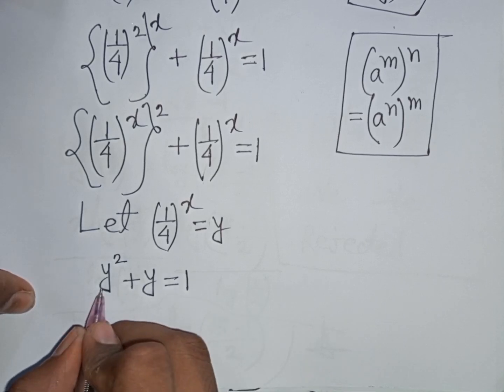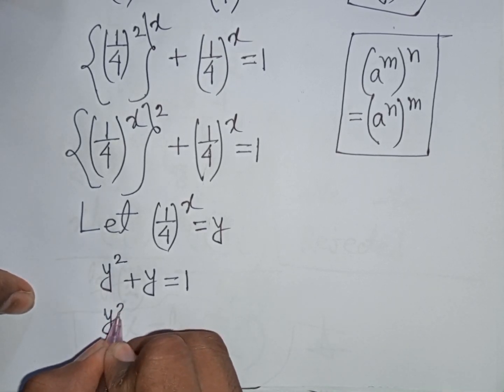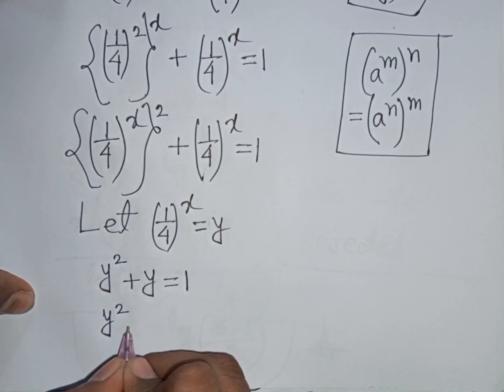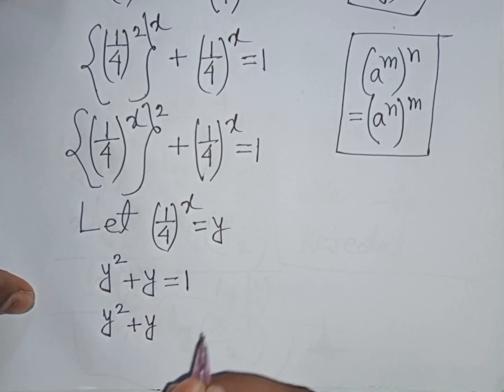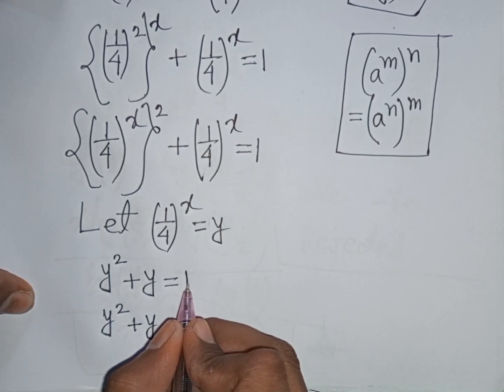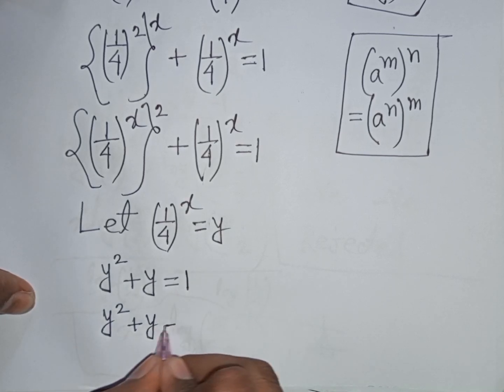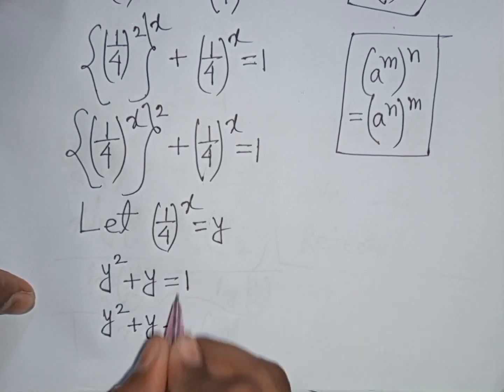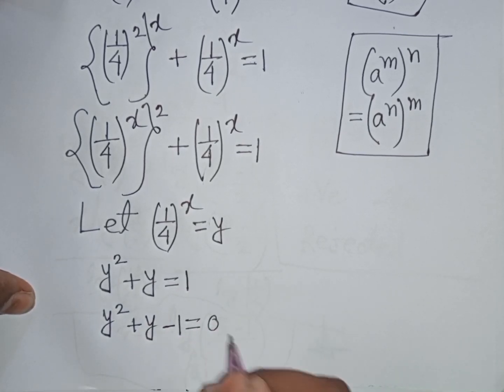Rearranging, we write y^2 + y - 1 = 0. Now we can apply the quadratic formula to solve for y.